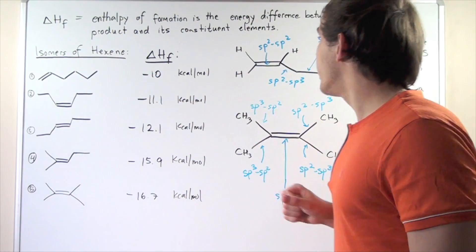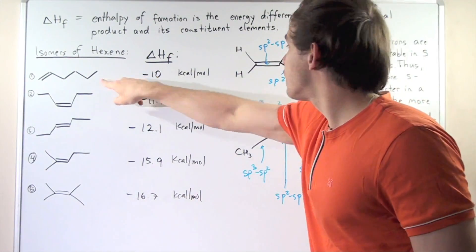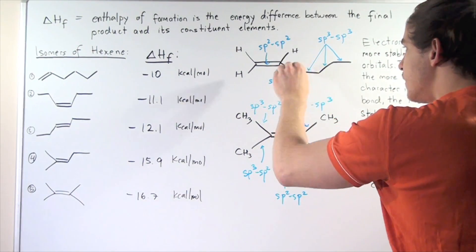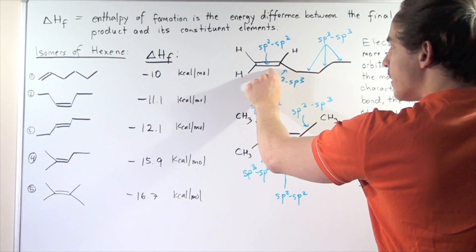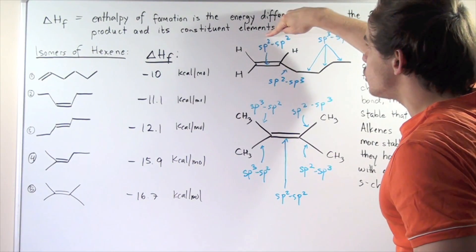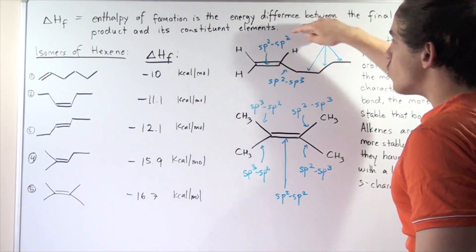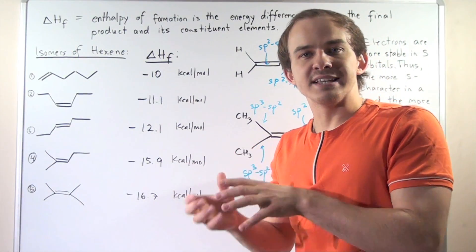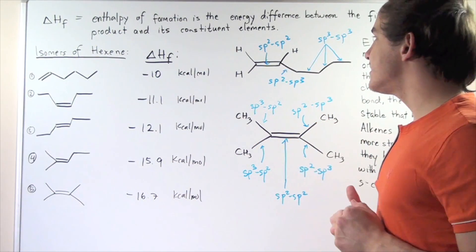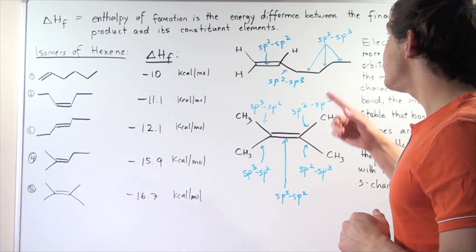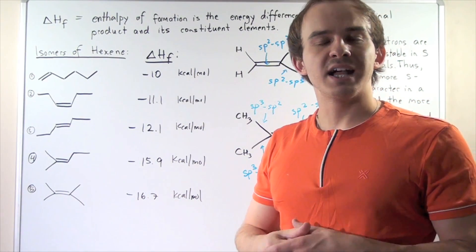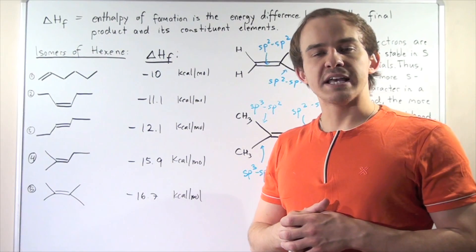So let's look at one. So here we have the first isomer. So notice we have a double bond. And within this double bond, the sigma bond contains sp2, sp2 character. Remember, sp2 simply means there's 33% s character and 66% p character. sp3 means there's only 25% s character and 75% p character. So sp2 bonds are more stable than sp3 bonds because sp2 bonds contain more s character.